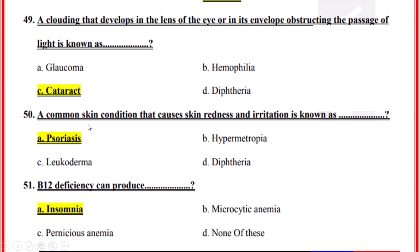A common skin condition that causes skin redness and irritation is known as? Correct option: A, Psoriasis. B12 deficiency can produce? Correct option: A, Insomnia.